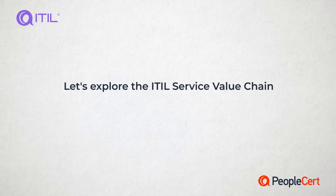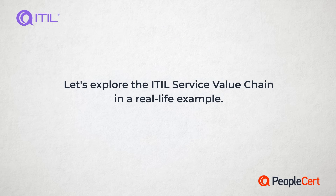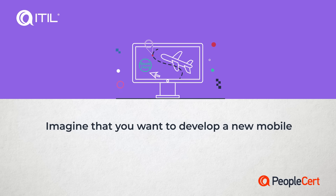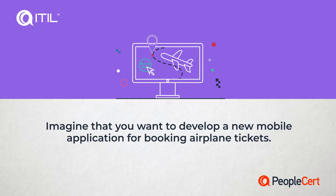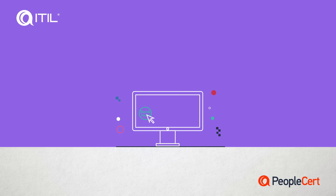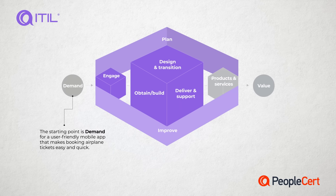Let's explore the ITIL Service Value Chain in a real-life example. Imagine that you want to develop a new mobile application for booking airplane tickets. The starting point is demand for a user-friendly mobile app that makes booking airplane tickets easy and quick.